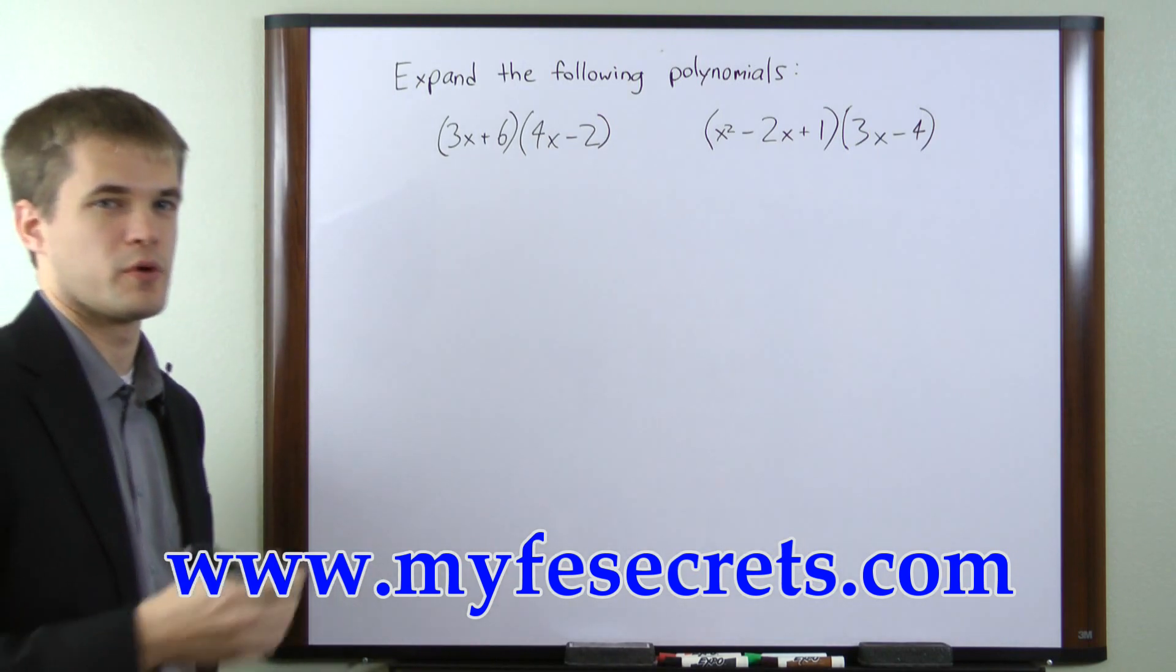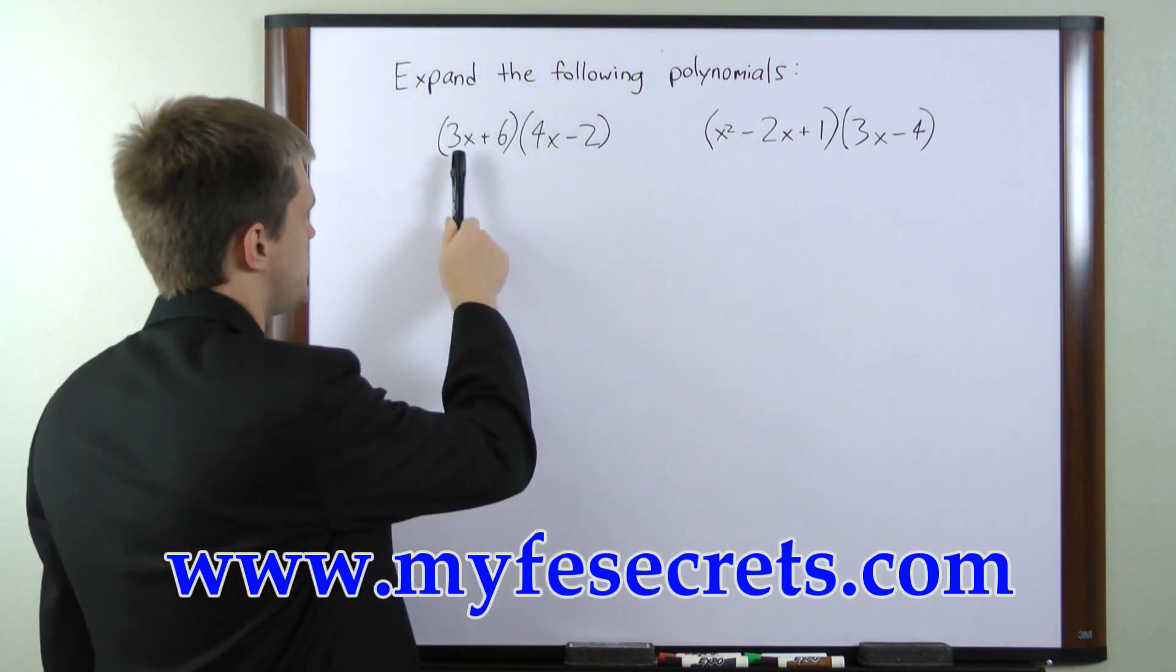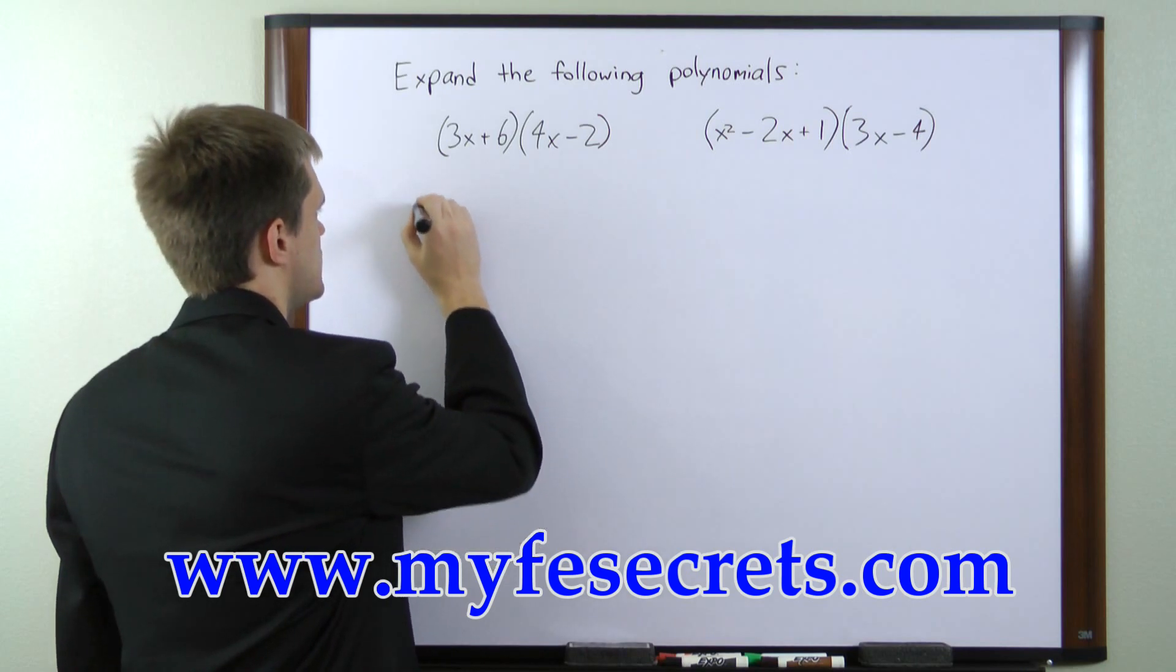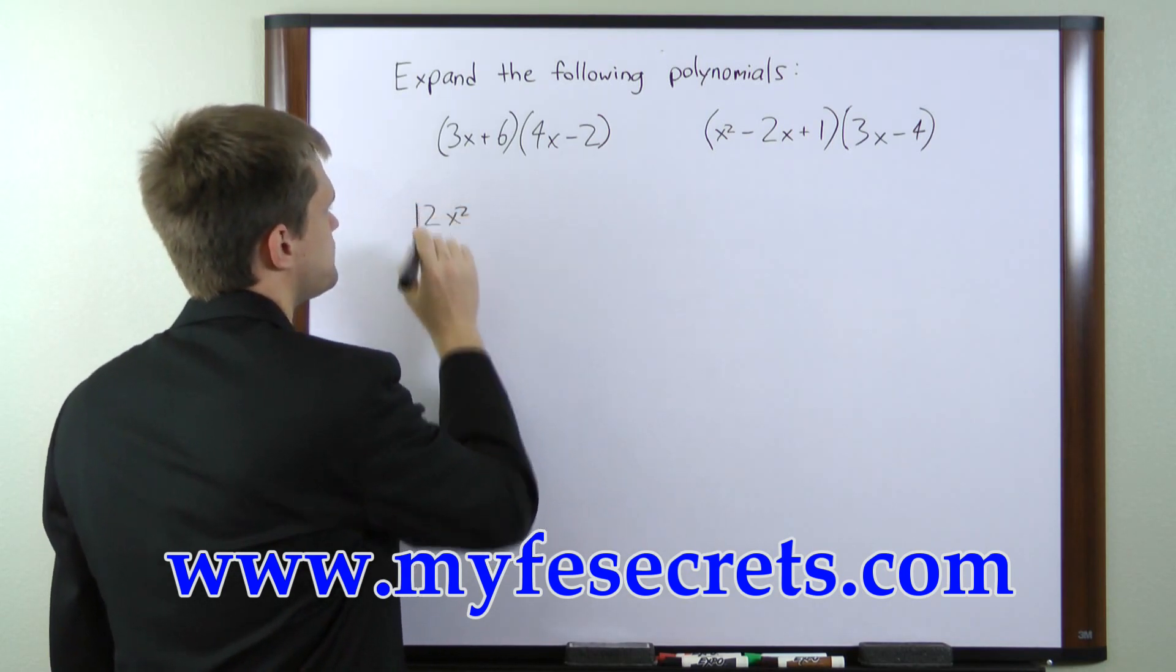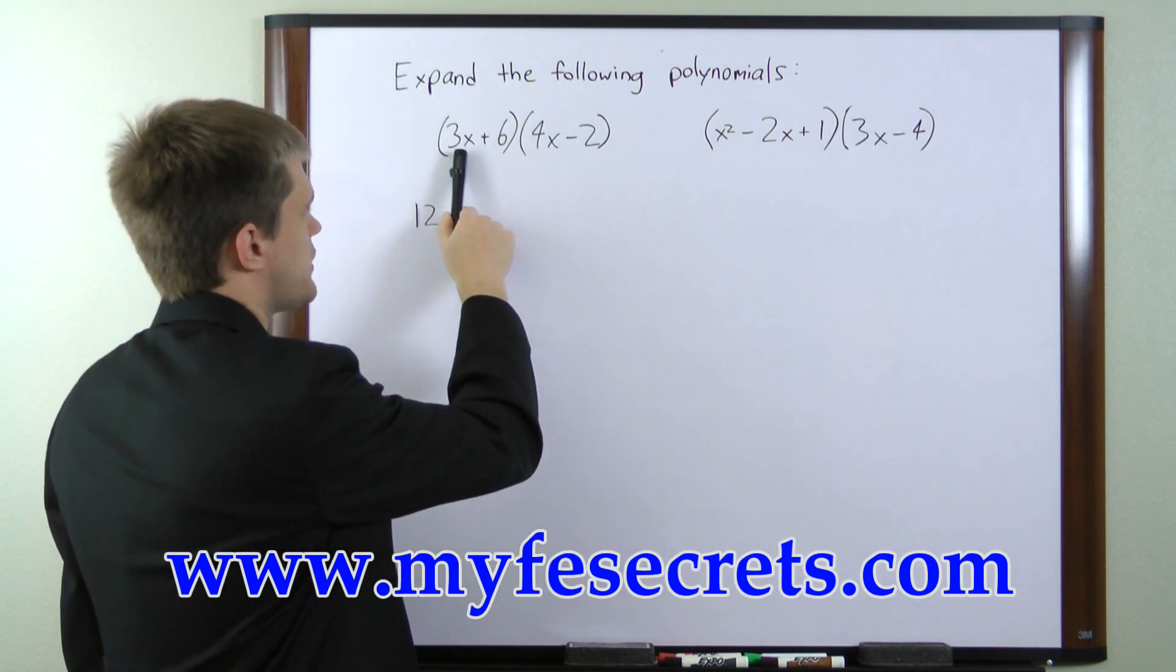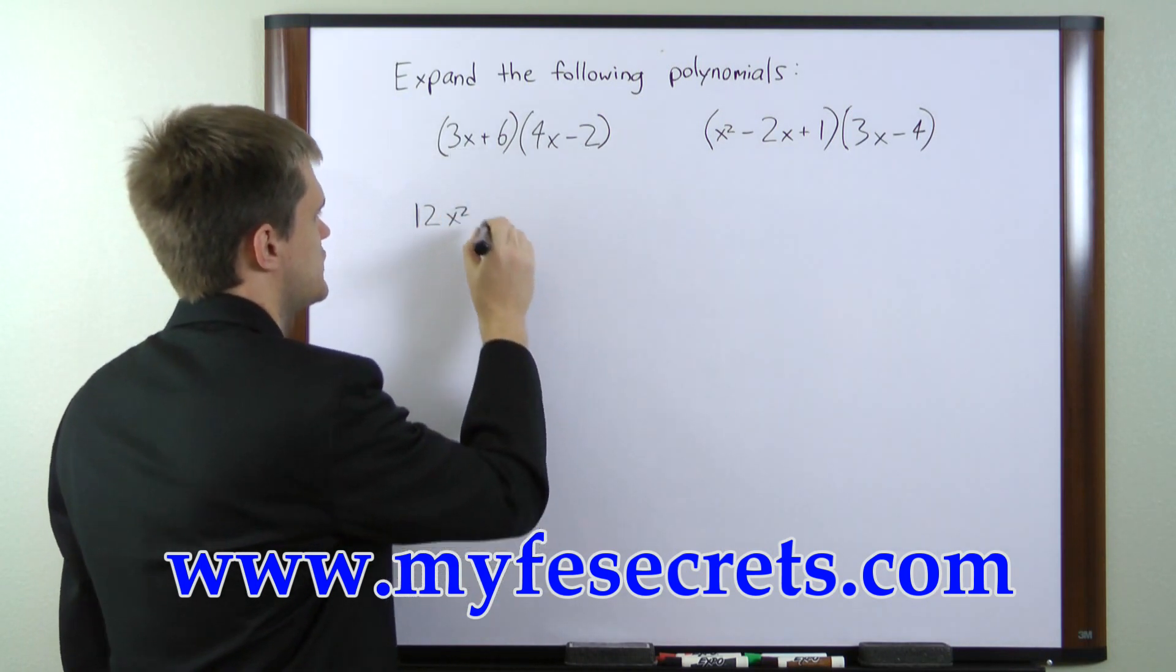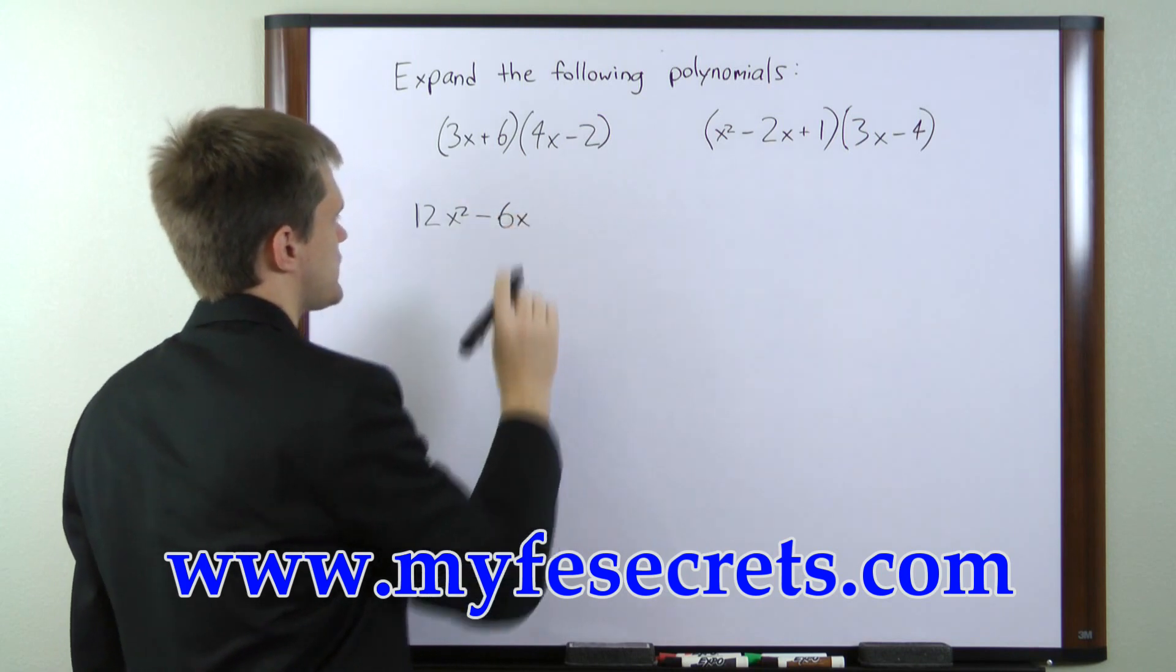So that's the order in which we'll proceed here. The first pair is going to be 3x times 4x, which gives us 12x squared. The outside pair is 3x times negative 2, which gives us minus 6x.